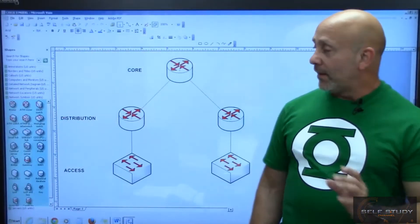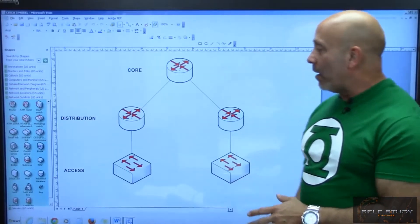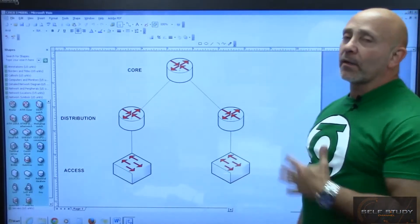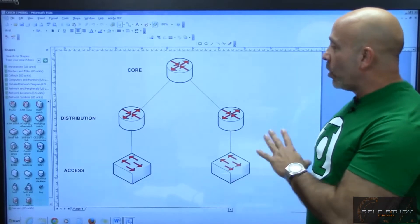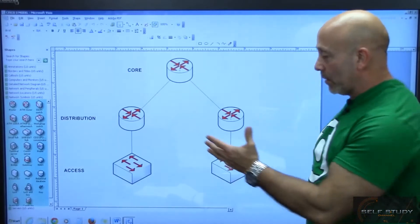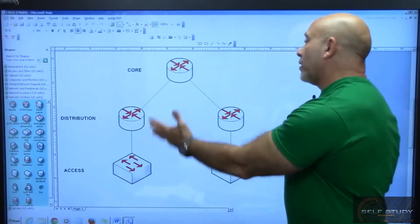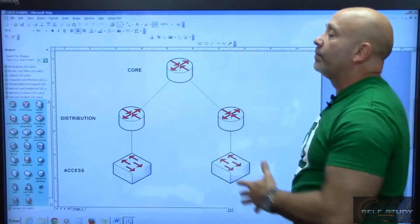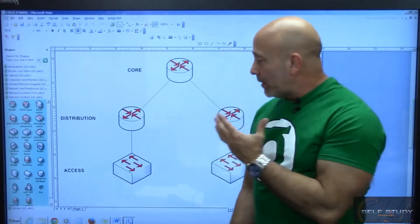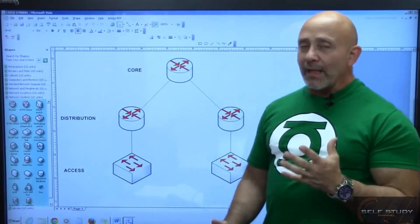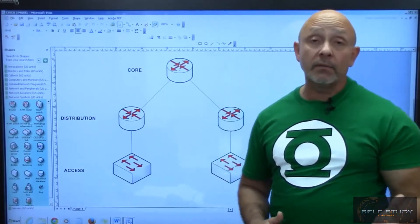All right, the distribution layer. Now this could be kind of confusing from the drawing, because it looks like all your networks and PCs are down here, then they go to this router and this router routes it over here. But really, the distribution layer is the go-between for the access layer and the core.